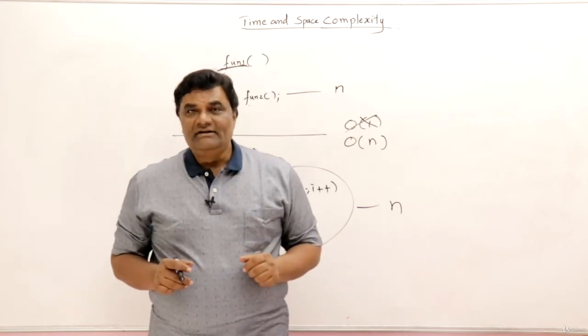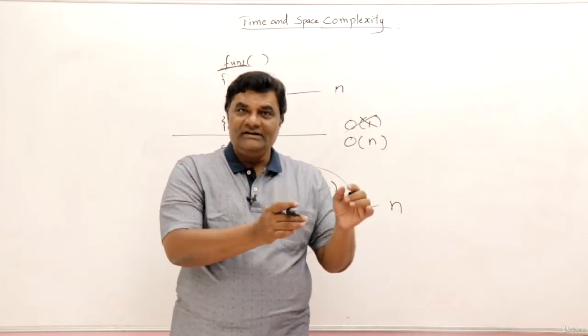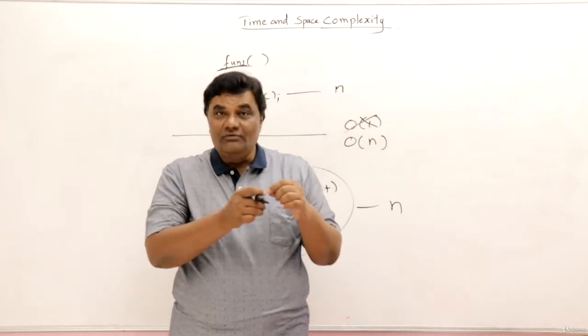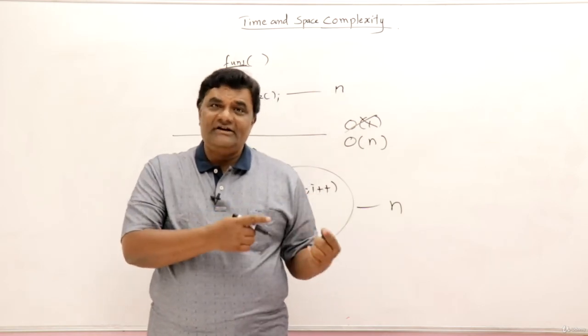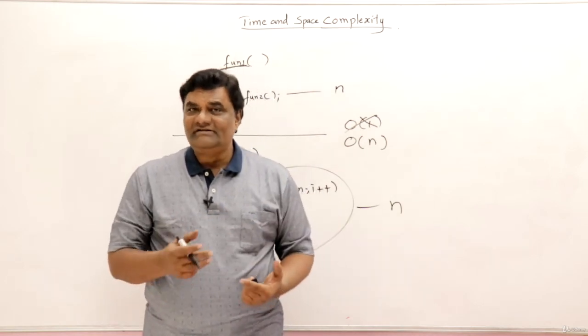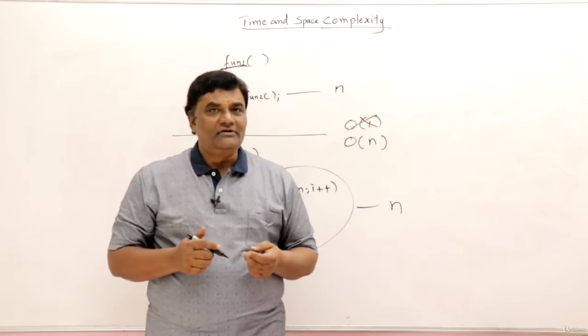For while loop, how to do that? For loop, if it is repeating from one to n, incremental loop, counter control loop, then it is n. If it is behaving in a different way, then definitely you have to read the code and understand. Maybe it is log n or root n. What it is, you have to find out.